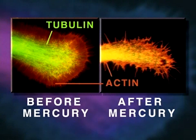Shown here is a neurite growth cone stained specifically for tubulin and actin, before and after mercury exposure. Note that the mercury has caused disintegration of tubulin microtubule structure.